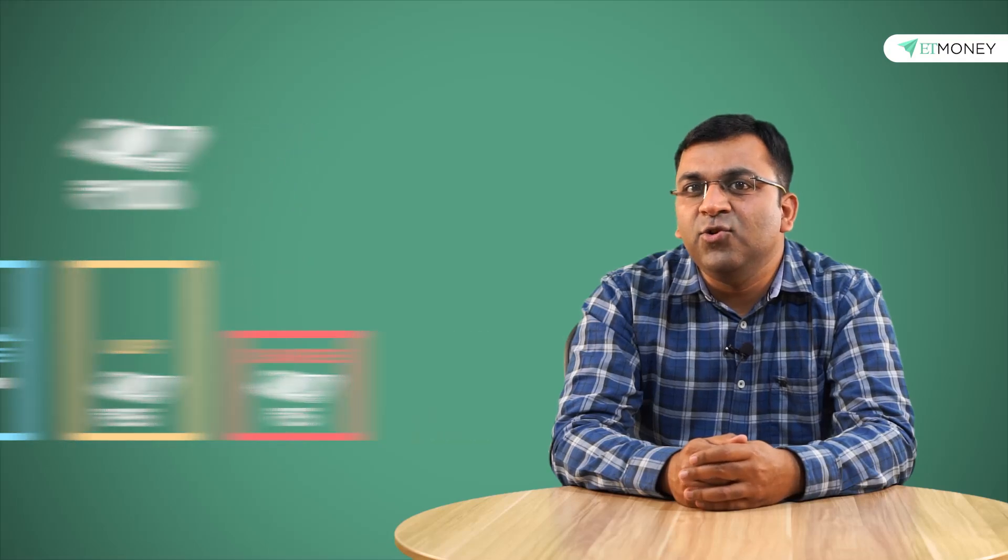At this point, one should also note that when a ULIP says that it has delivered 10% returns, what it really means is that it has delivered 10% on the 95 rupees and not the 100 rupees. So that's something all investors need to know of.